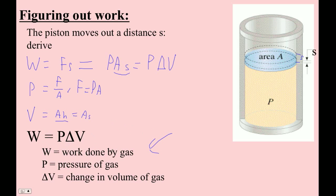W is the work done by the gas, P is the pressure of the gas, and delta V is the change in volume of the gas. Now if delta V is positive, positive means that the piston moves out — that's positive delta V. And then of course if we move it down, moving down is negative delta V — if it gets smaller, that's simple.